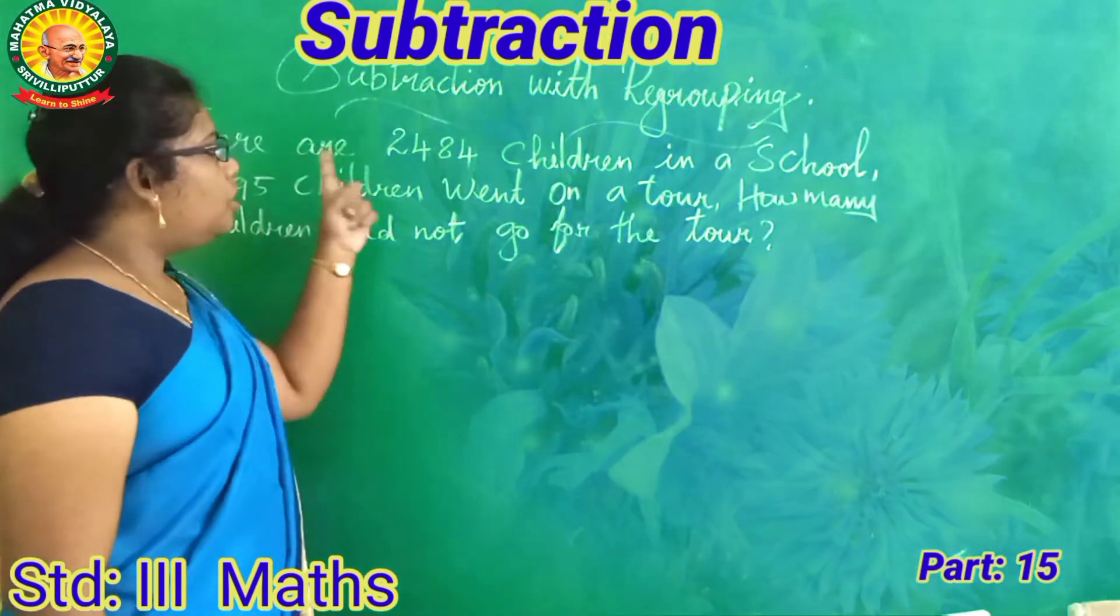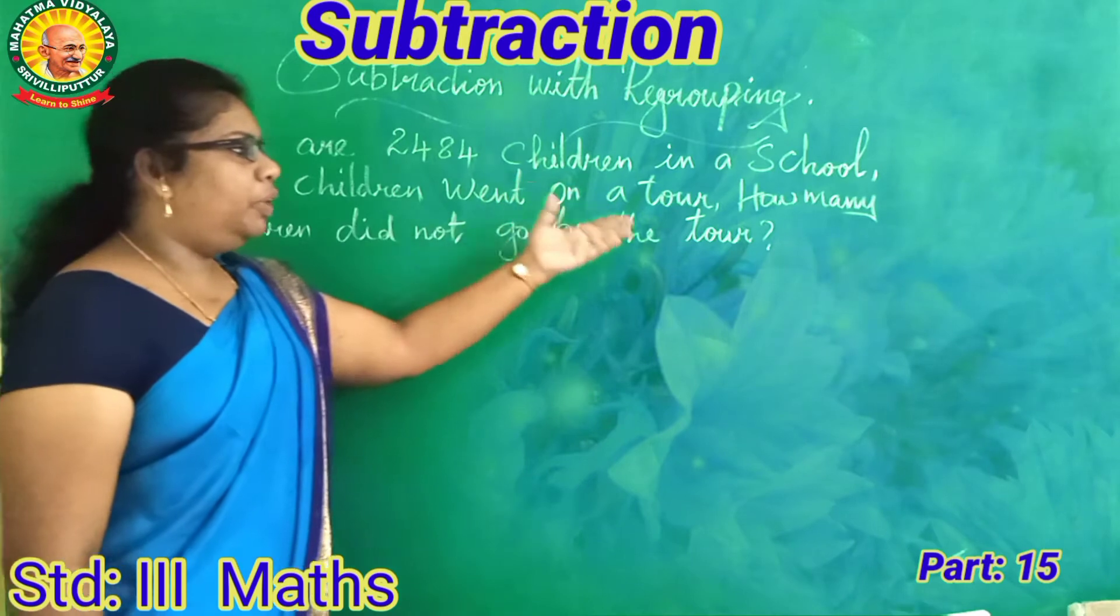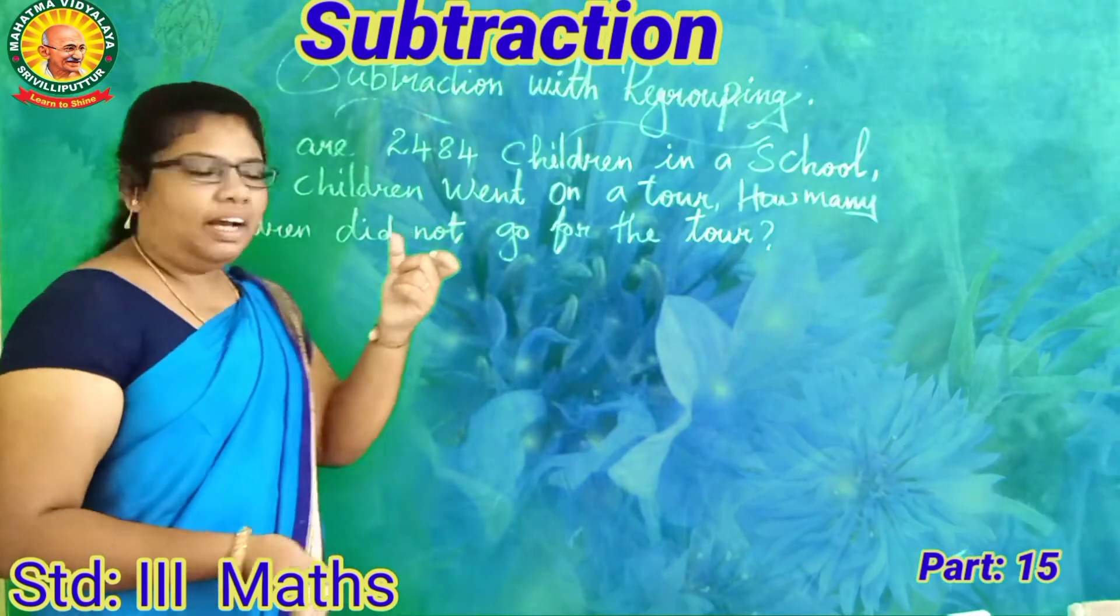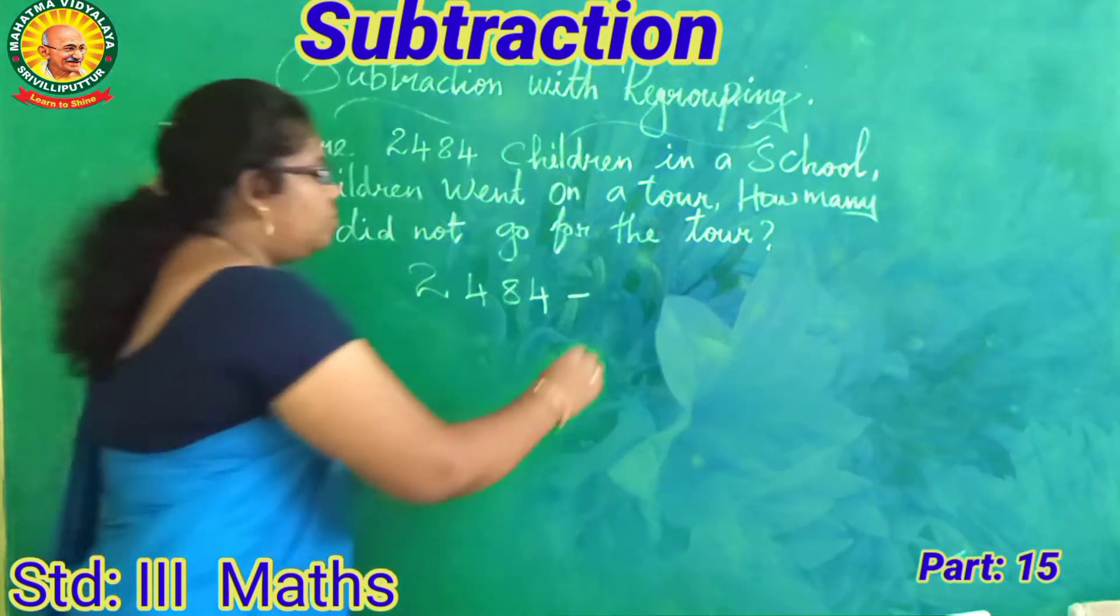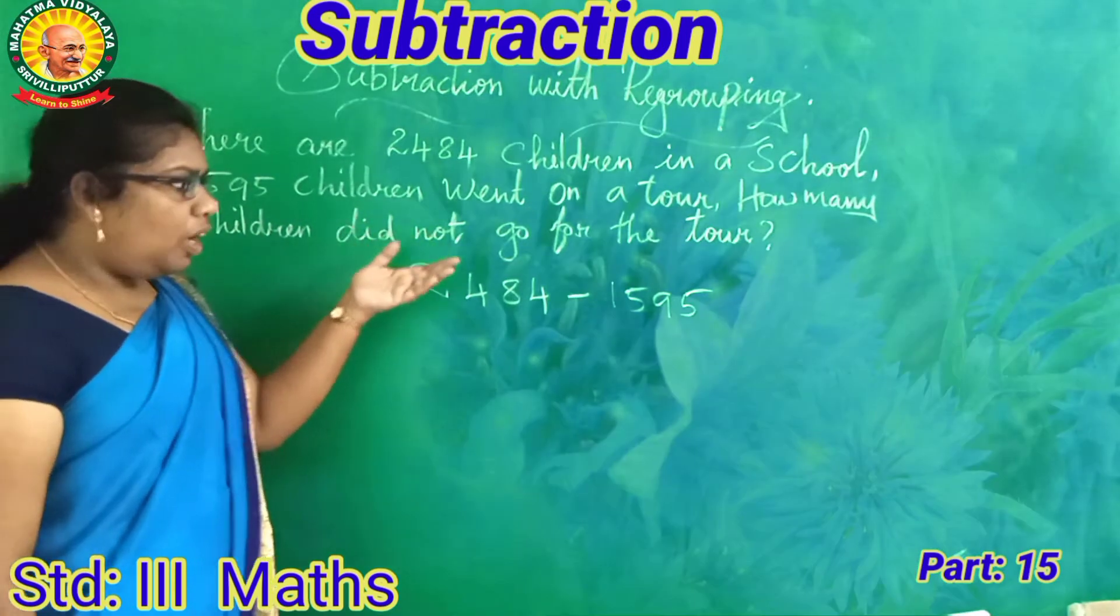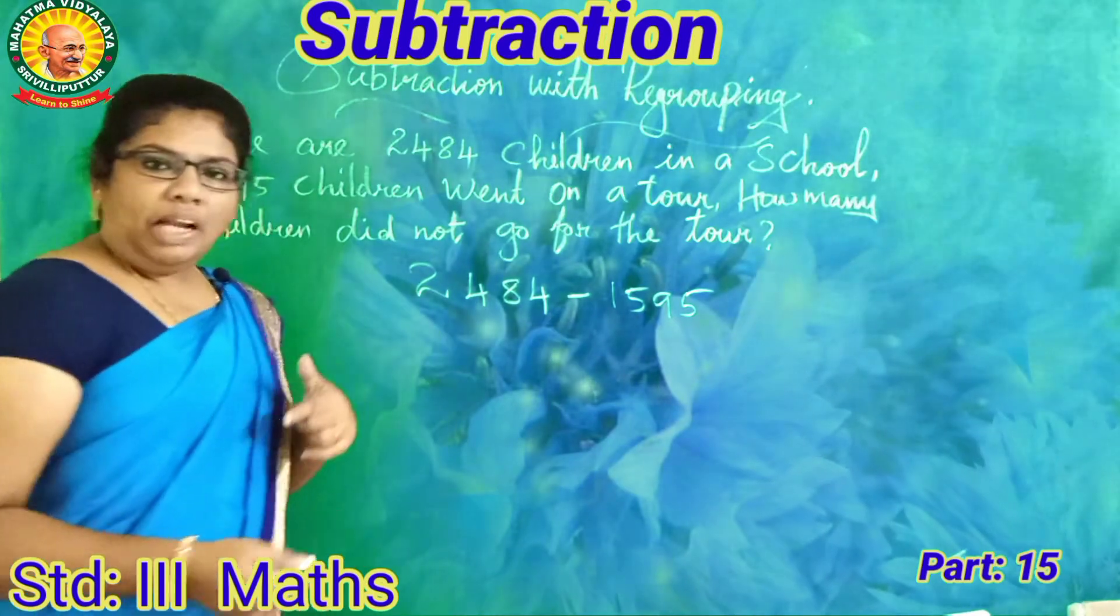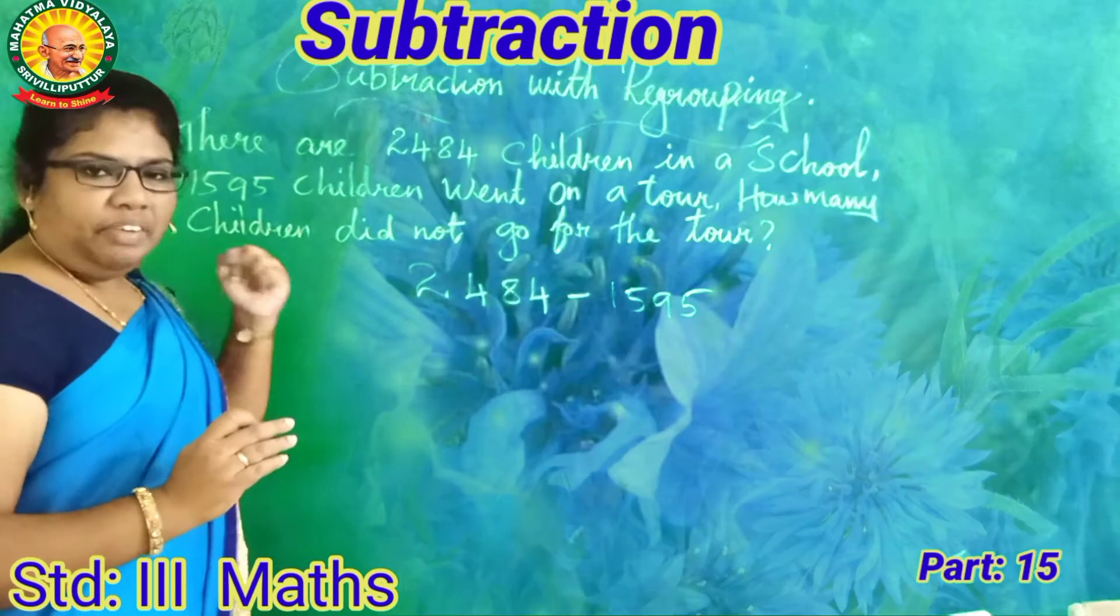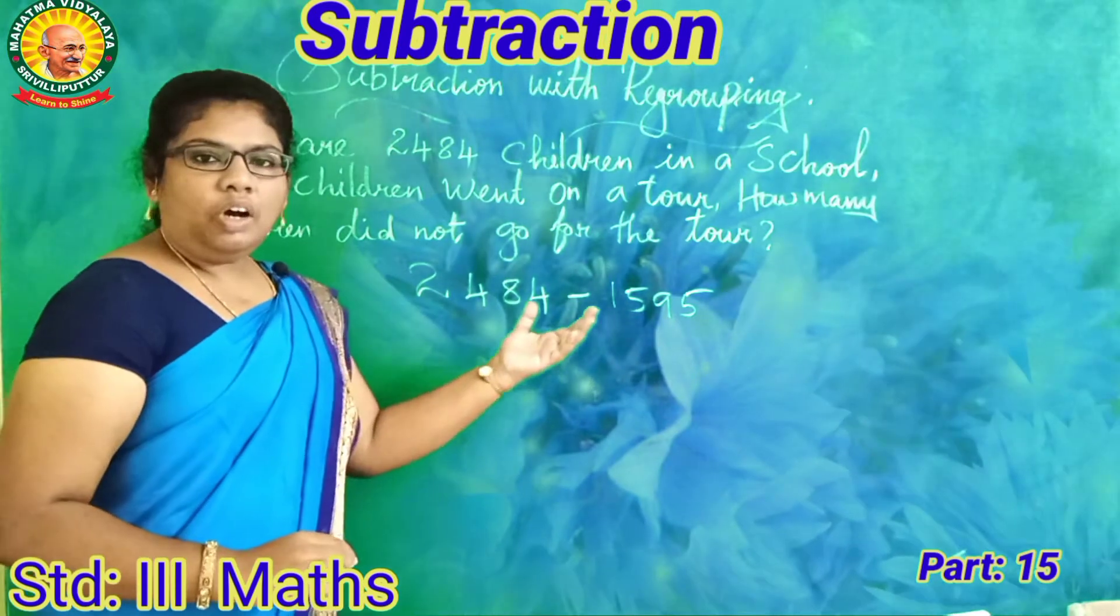See one word problem. There are 2484 children in a school. 1595 children went on a tour. How many children did not go for the tour? One school, totally 2484 children. 1595 children went on tour. Write the numbers according to the column wise.